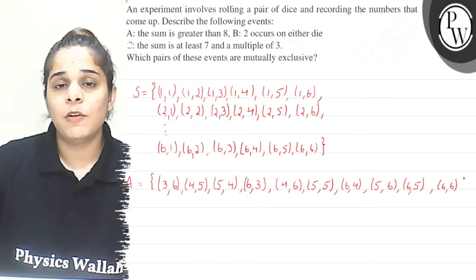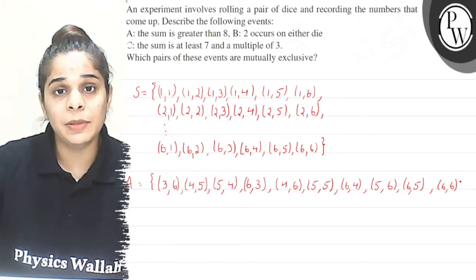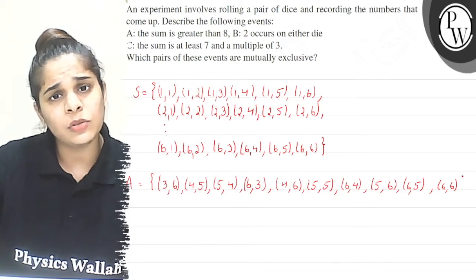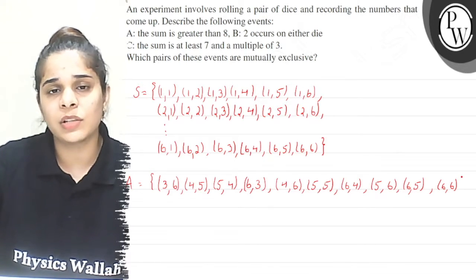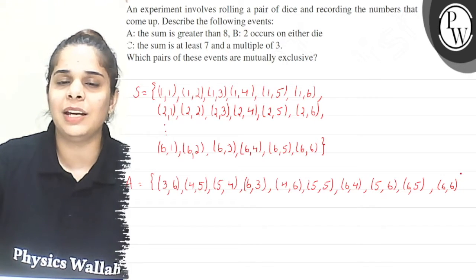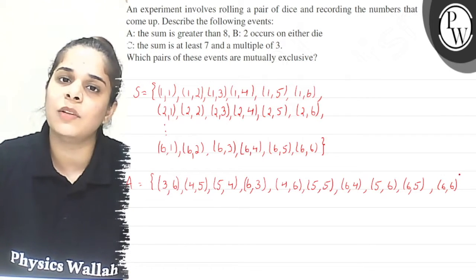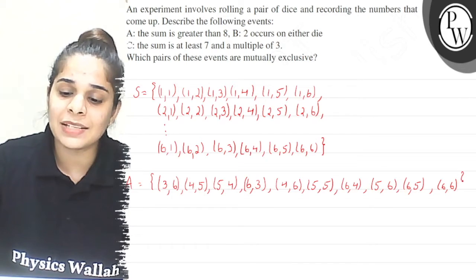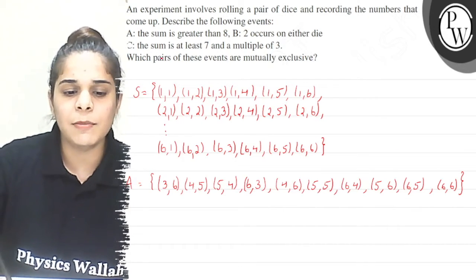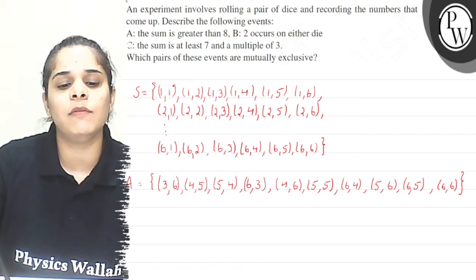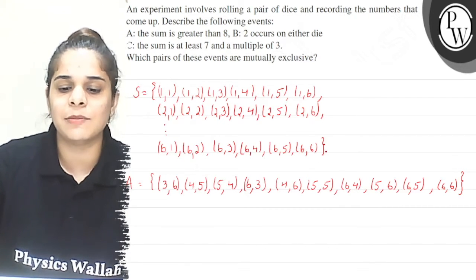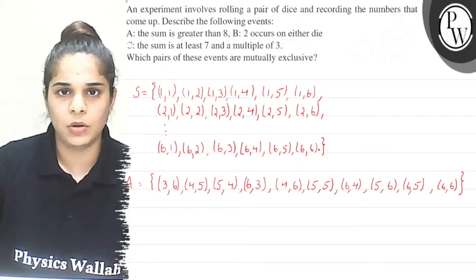What about 13? Can I ever get 13? No, because the maximum is (6,6) whose sum is 12. So greater than 8 means 9, 10, 11, and 12. The sum maximum can be 12 and minimum can be (1,1) which is 2.